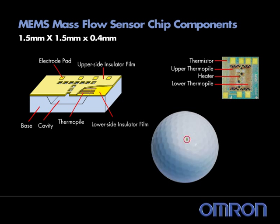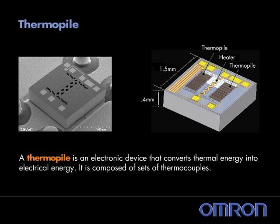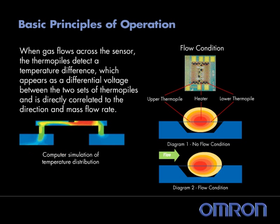The chip components include a thermistor to regulate the heater temperature and two sets of thermopiles located below an insulating film and the electrode pads. The thermopiles are devices made up of several miniature sets of thermocouples used to convert thermal energy or temperature differences into electrical signals.